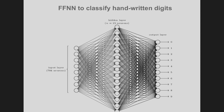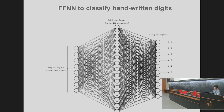This is not a very large network by modern standards, but it still has a lot of parameters. Each neuron in the hidden layer accepts 784 inputs, meaning 784 weights per neuron. So 784 times 15 neurons plus biases gives on the order of 12,000 parameters to optimize — quite many parameters.